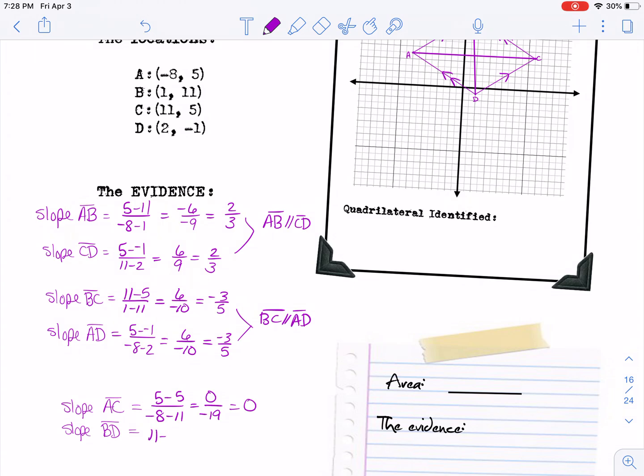The slope of BD, you would say 11 minus negative 1 over 1 minus 2, so that gives you 12 over negative 1. As long as you get any sort of number, they're not perpendicular, because if they were perpendicular you should get undefined with a zero on the bottom. But we don't get that, we got a number, so that means that those two are not perpendicular.